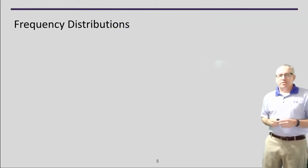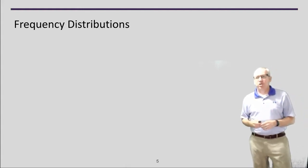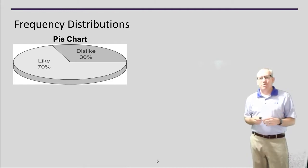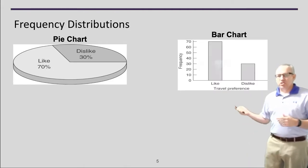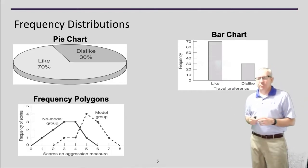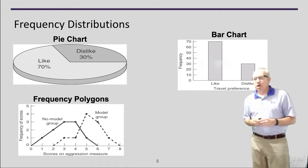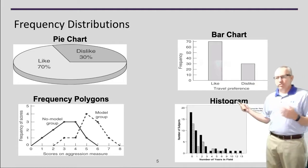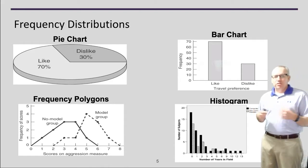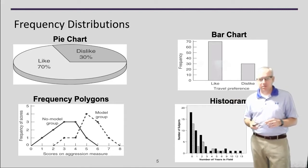With all of these types of statistics, we have to worry about frequency distributions and how we show the information. There are different ways to show data. We can do things like pie charts showing how many people fall into each category, bar charts for the same kind of information, frequency polygons showing two different measurements with a solid and dotted line, or histograms trying to show multiple variables on the same diagram. You want to think about what's the best way to present the data to make the case you're trying to make.